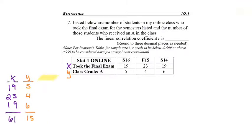Next I need to find my XY column, which remember is to multiply straight across. So I'll multiply the first numbers, 19 times 5 to get 95, 23 times 4 to get 92, and 19 times 6 to get 114. Next I'm going to total the three vertical numbers, 95, 92 and 114 to get 301.